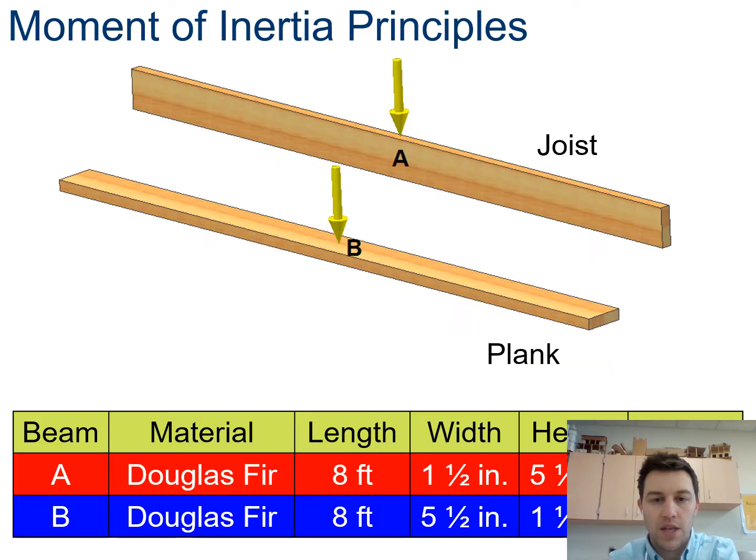So if I look at the exact same wood board here, it's made out of Douglas fir, it's eight feet long, and it's a two by six. The two by six is actually one and a half by five and a half. So this two by six in configuration A is on its end, so it's vertical, and in configuration B it's on its side. So when it's vertical it's considered a joist, and when it's horizontal it's considered a plank.